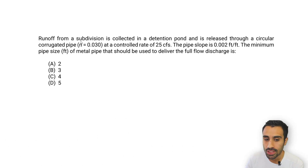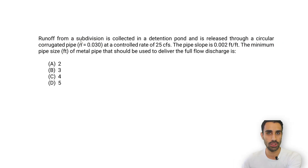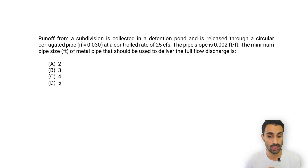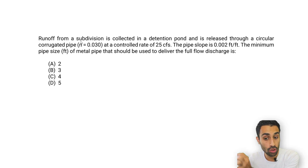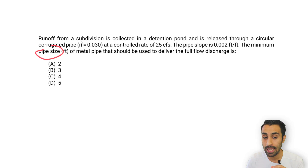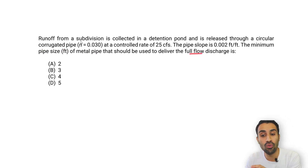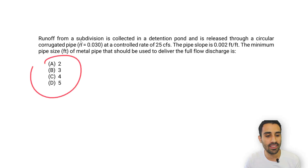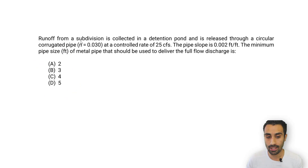We're told runoff from a subdivision is collected in a detention pond and is released through a circular corrugated pipe with an n value equal to 0.03 at a controlled rate of 25 CFS — cubic feet per second. The pipe slope is 0.002 feet per foot. The minimum pipe size in feet of the metal pipe that should be used to deliver the full flow discharge is what we need to find, and the answer will be in feet.